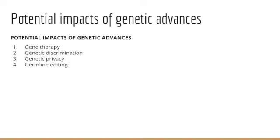We're also struggling with genetic privacy more generally. For instance, if we participate in some kind of direct-to-consumer test like 23andMe or Ancestry.com, how do we know our information will remain private? Who has access to the information? Can law enforcement have access to it and use it? Can it be used against you or even against a family member someday? There are also other social, ethical, and moral implications to consider — how do we govern and oversee the use of germline editing technologies?